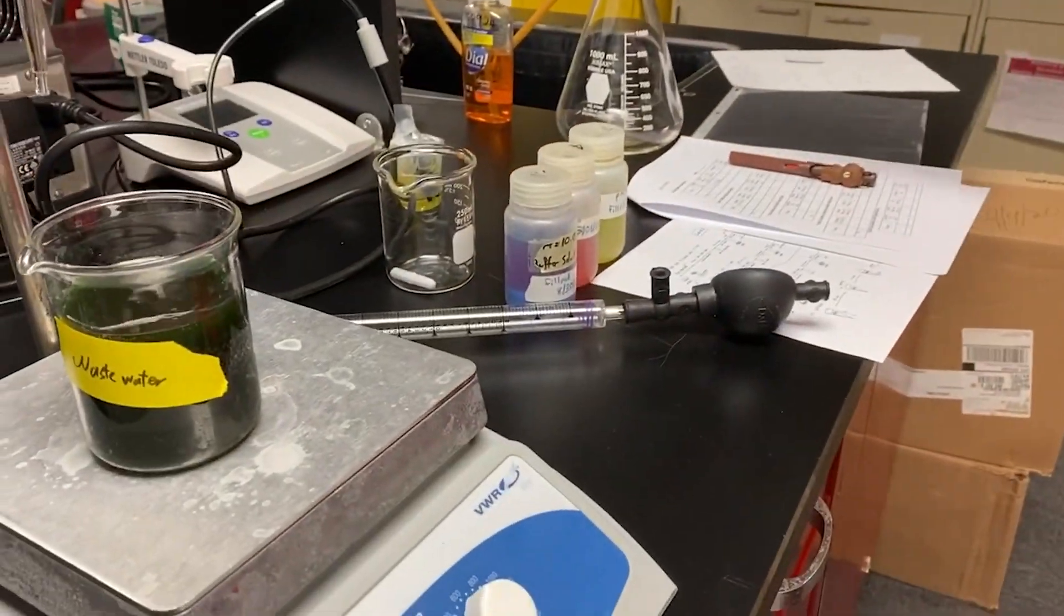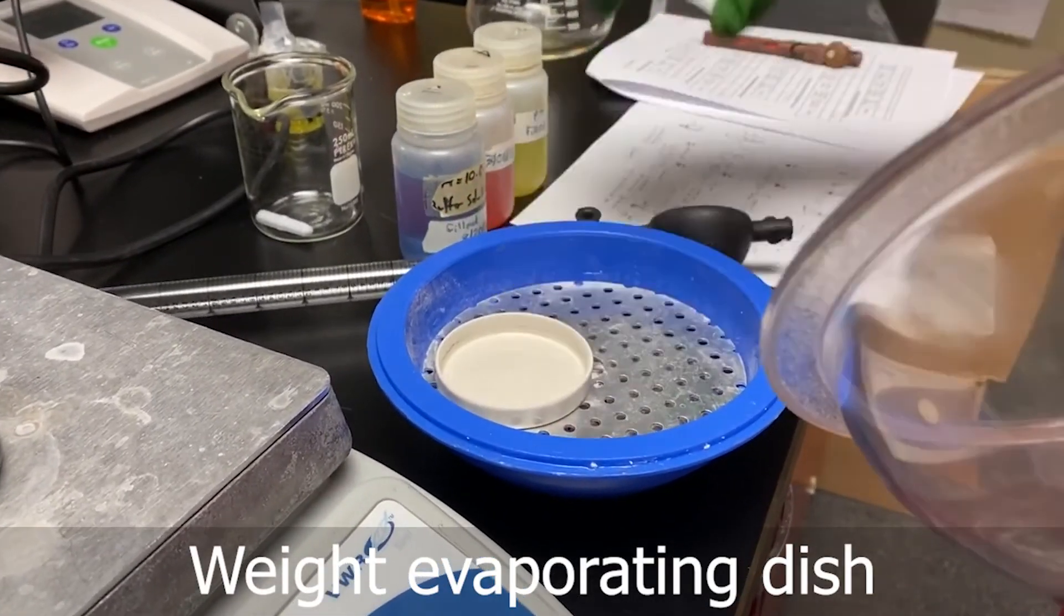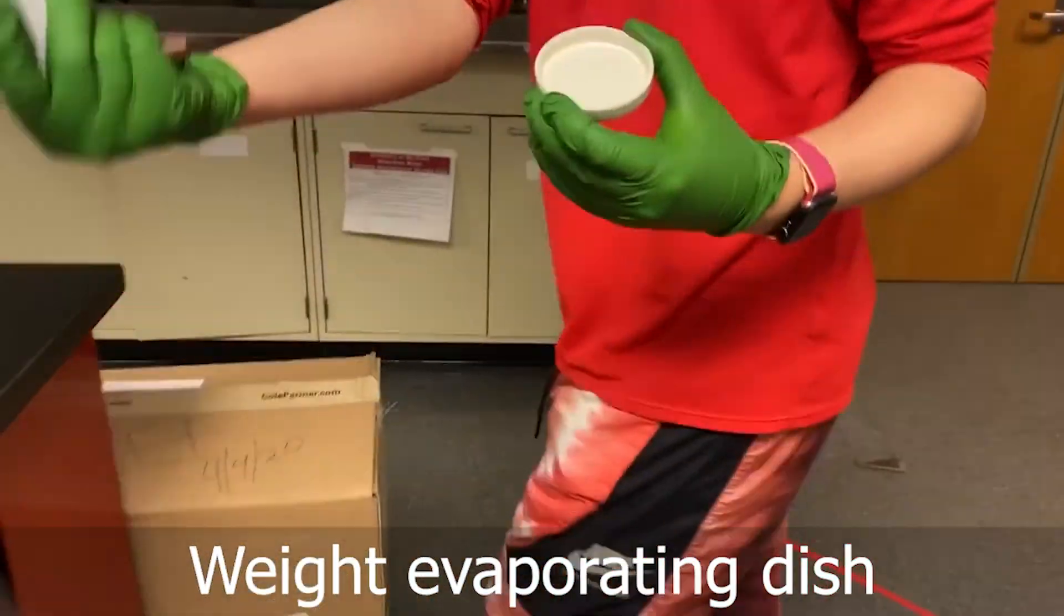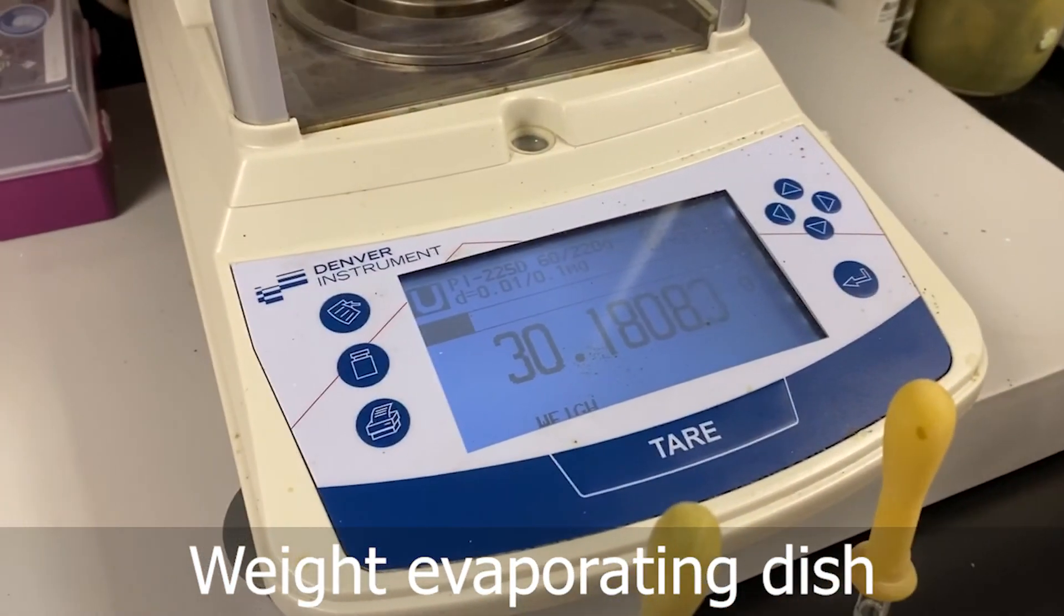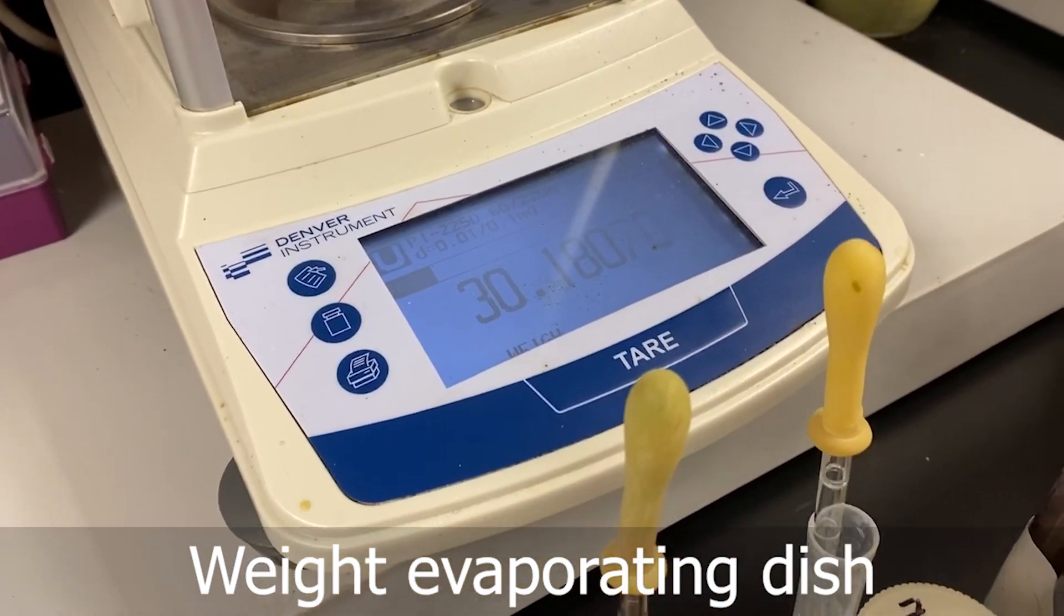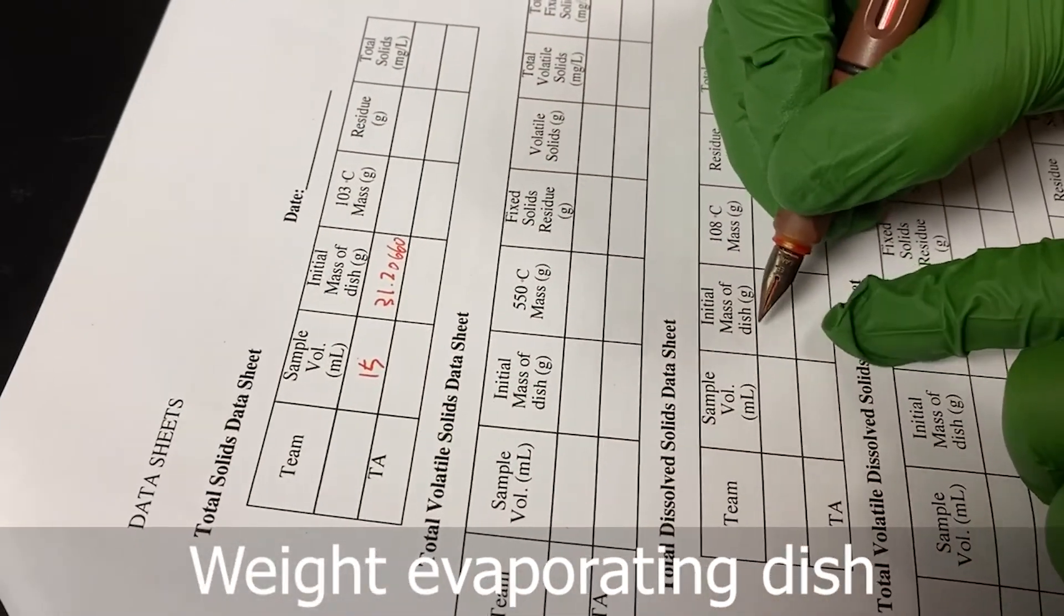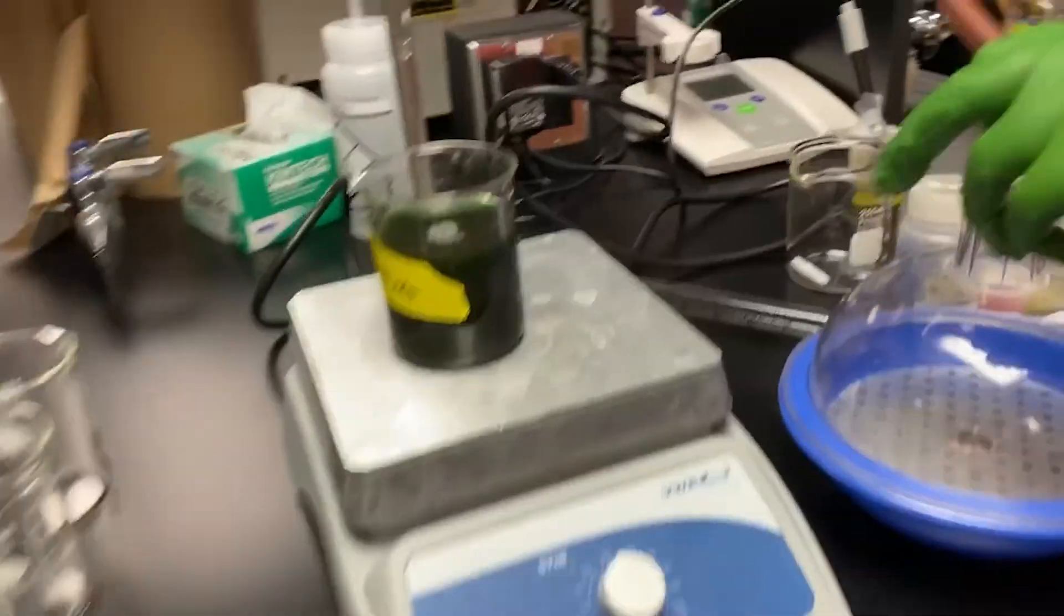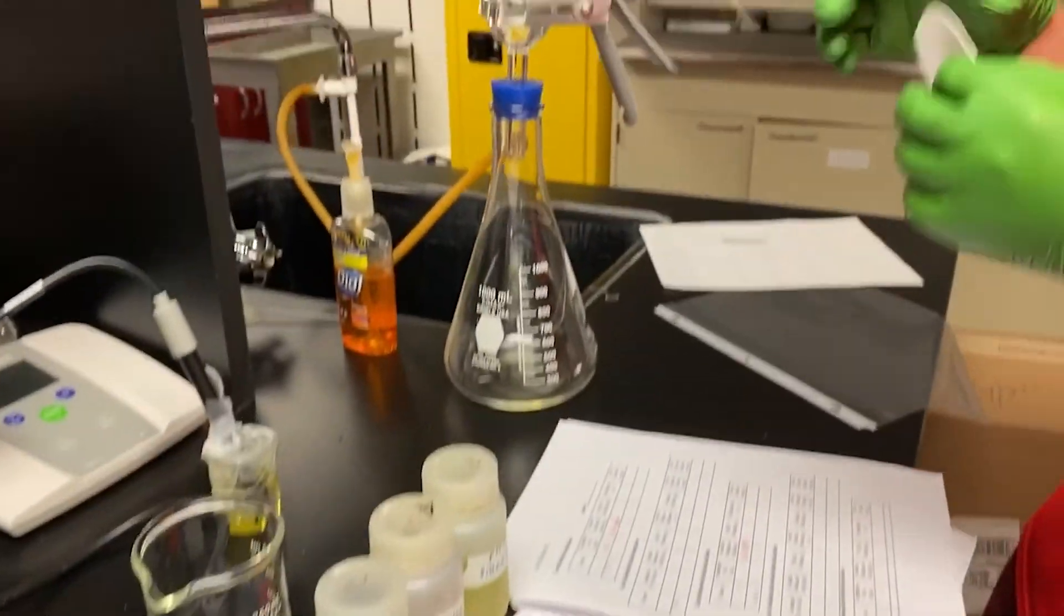And then for the next one, we are going to use the filtration for total suspended solids. We need to measure the mass of another evaporation dish and then write down the mass. Because this one is the dissolved solids, we can store it here.